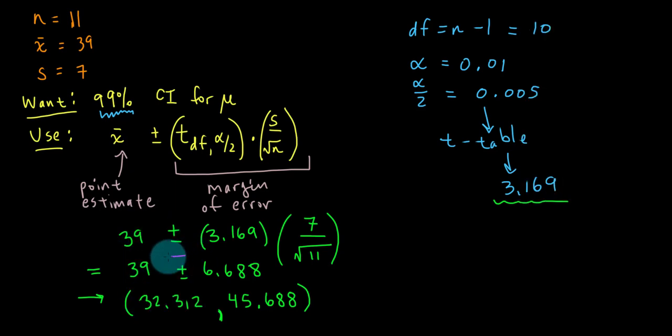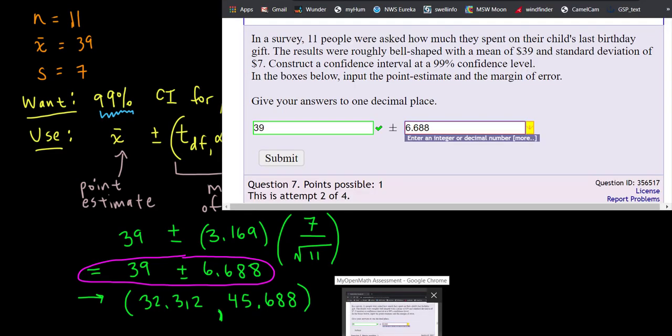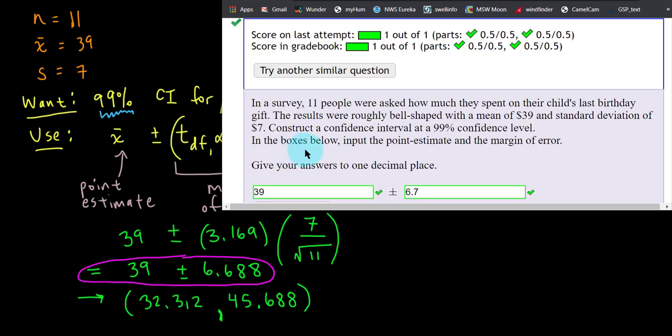Now let's go enter in what I'm circling in pink here into the homework problem. Make sure that it works. Now it wants our values to be rounded to one decimal place. So I better enter 6.7 there. And that's great.